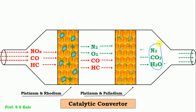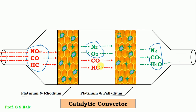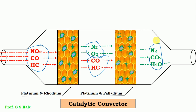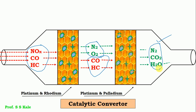In summary, at the inlet we had NOx, CO, and HC. In ceramic block number one, NOx reacted to form N2 and O2. In ceramic block number two, CO and HC reacted to form CO2 and H2O. The catalytic converter thus converts NOx, CO, and HC into N2, CO2, and H2O. This is all about the working of a catalytic converter. Thank you very much for listening.